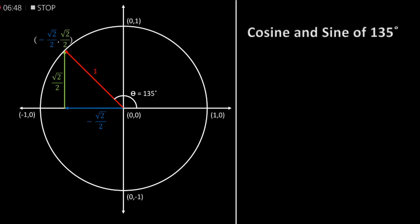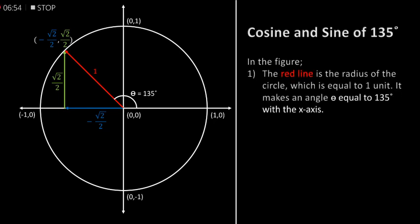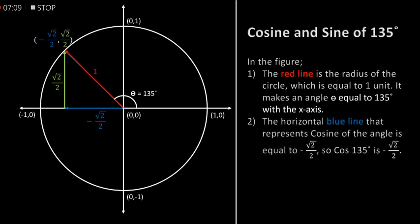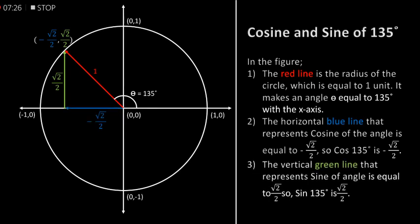Cosine and sine of 135 degrees. In the figure, the red line is the radius of the circle which is equal to 1 unit. It makes an angle theta equal to 135 degrees with the x-axis. The horizontal blue line that represents cosine of the angle is equal to minus square root of 2 by 2, so cos of 135 degrees is equal to minus square root of 2 by 2. The vertical green line that represents sine of the angle is equal to half of square root of 2.